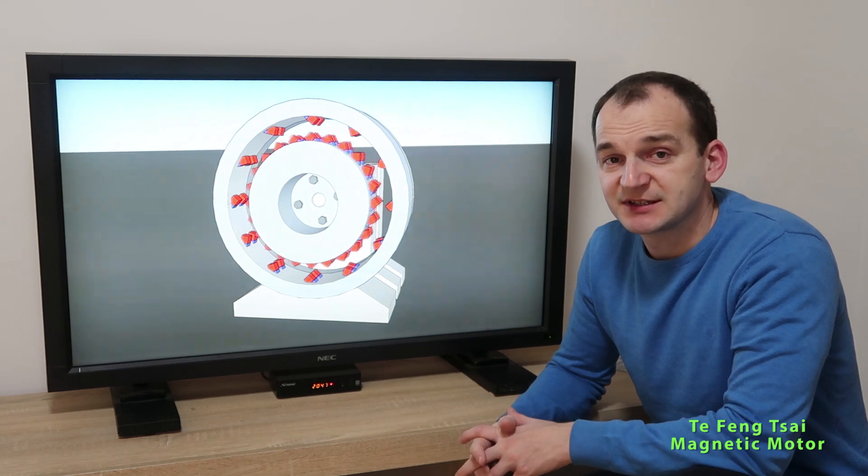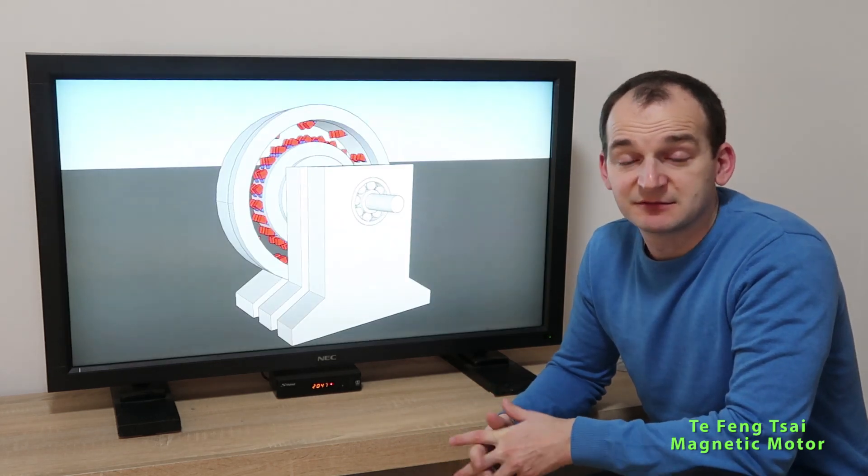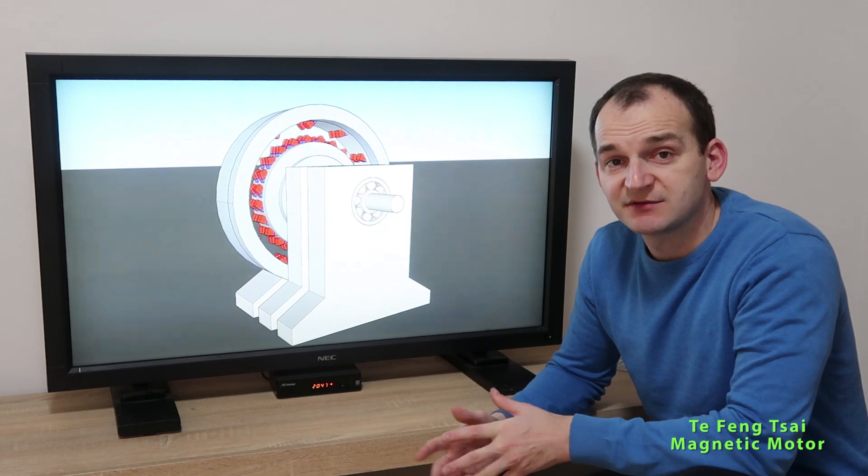much to say about this Te Feng Cai magnetic motor. We will see what's the case with other designs. What can I conclude about the Te Feng Cai magnetic motor or magnetic motor propulsion system or however it's called? You can read the patent. We cannot really know because this simple construction can fool us easily. I don't think it can work really, but I'm open-minded, so you never know.